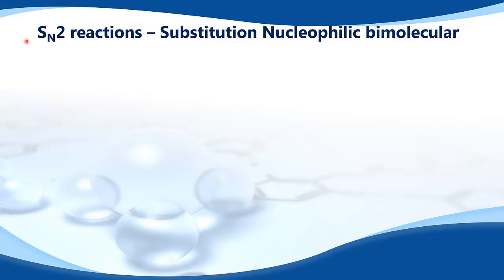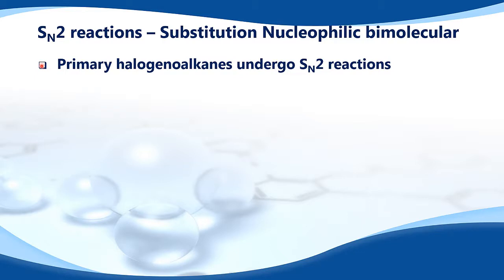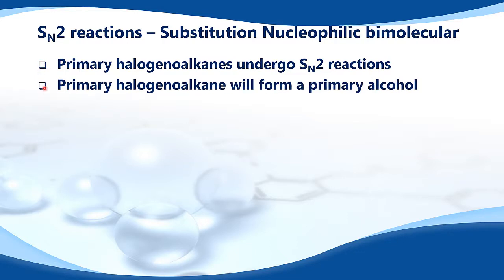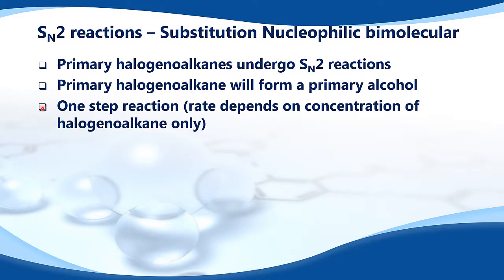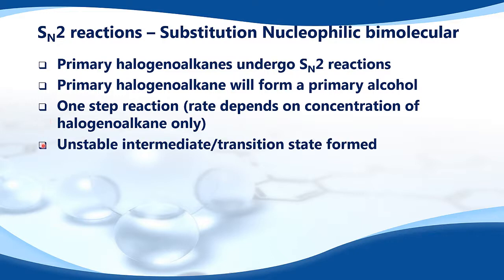Next, it's SN2 reactions — Substitution Nucleophilic Bimolecular. This time it's primary halogenoalkanes that undergo SN2 reactions. The primary halogenoalkane will form a primary alcohol. It's a one-step reaction, and the rate depends on the concentration of the halogenoalkane only. An unstable intermediate, or transition state, is formed.